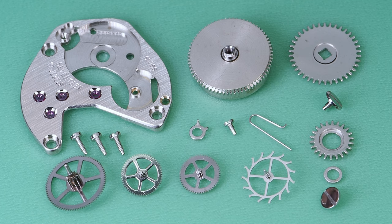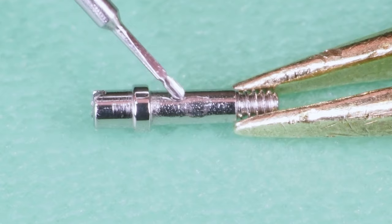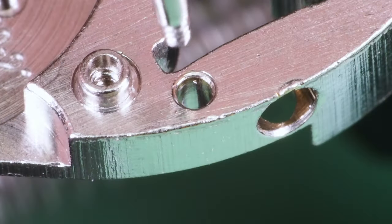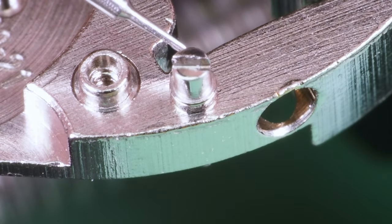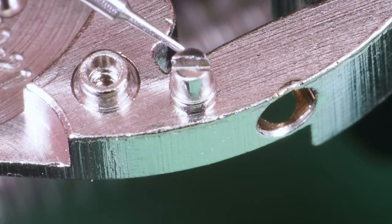Here are the parts to assemble the train and barrel bridge. Except the setting lever screw, which I'm going to lubricate with HP 1300 and insert it in the main plate. I'll also put a small amount of the HP 1300 on the top section of the setting lever screw.